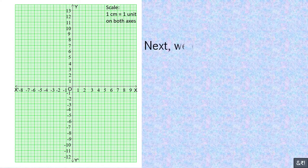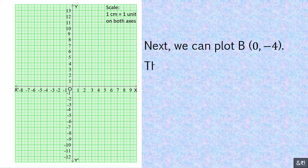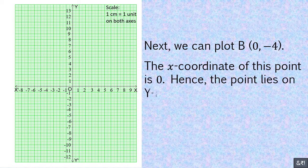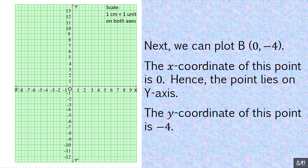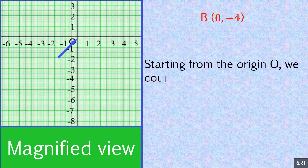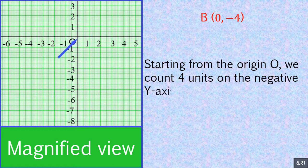Next, we plot the point (0, −4). The x-coordinate of this point is 0, so the point lies on the y-axis. The y-coordinate is −4. Starting from origin O, we count 4 units on the negative y-axis and mark the point as B.